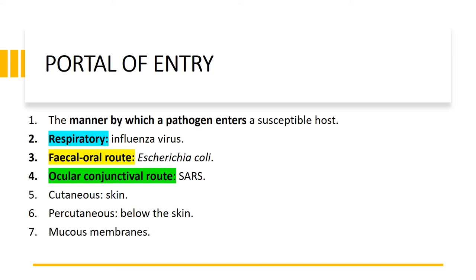We now look at the portal of entry — the manner by which a pathogen enters a susceptible host. We have the respiratory route, the fecal-oral route, and the ocular-conjunctival route. In order to understand the risk posed by a specific biological agent, we must analyze the portal of entry. Once we understand the route of transmission and the portal of entry, we can propose measures to mitigate risk by application of the five controls: elimination, substitution, engineering controls, administrative controls, and personal protective equipment. These can be applied concurrently to limit or mitigate the risk of transmission via the different portals.